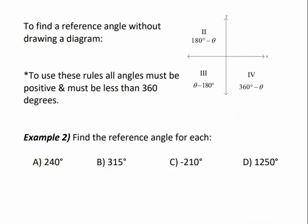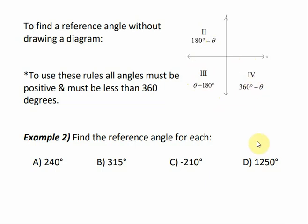To find a reference angle without drawing a diagram, you can use these rules. In the first quadrant, no subtraction needed — it's already acute. In the second quadrant, do 180 minus the angle; for example, 180 minus 120 equals 60. In the third quadrant, between 180 and 270 degrees, subtract 180 from the angle. In the fourth quadrant, subtract the angle from 360 — for example, 360 minus 330 equals 30 degrees.